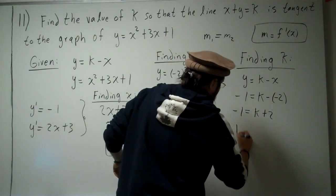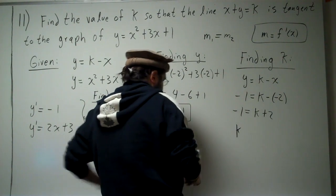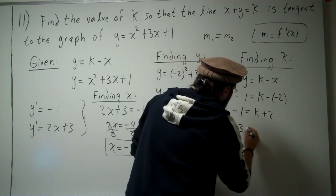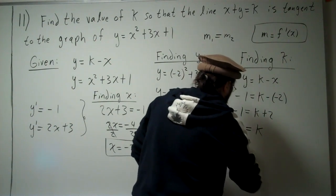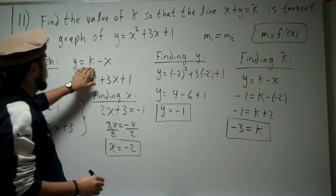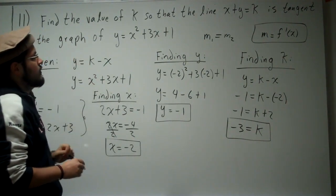Move this to the other side. You obtain negative 3 equals k. Therefore, at k equals negative 3, plug it in, and that's your equation.